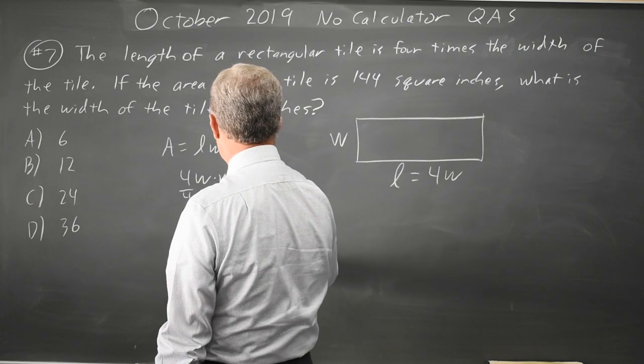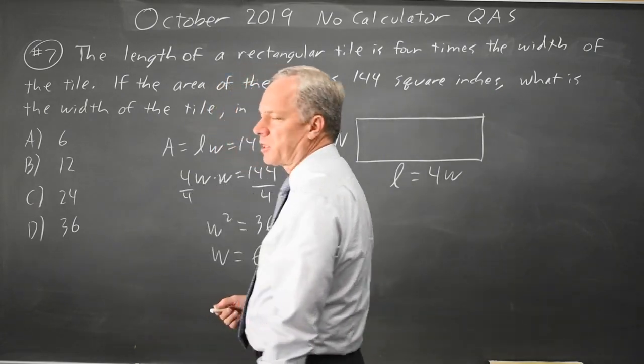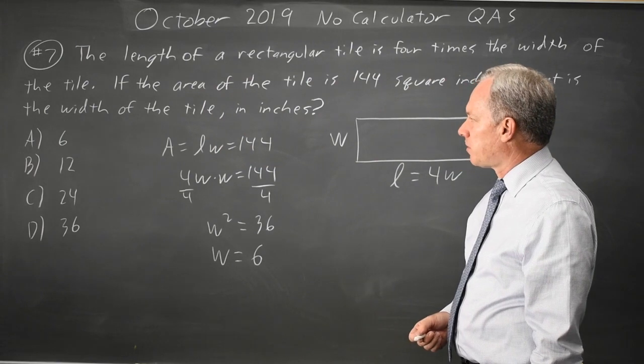Square root both sides, W equals positive 6 because the negative answer does not make sense for the worth of the problem.